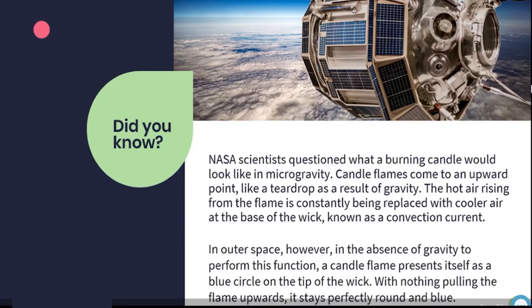In outer space, however, in the absence of gravity to perform this function, a candle flame presents itself as a blue circle on the tip of the wick. With nothing pulling the flame upward, it stays perfectly round and blue.